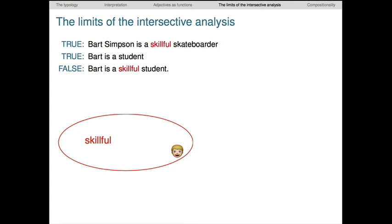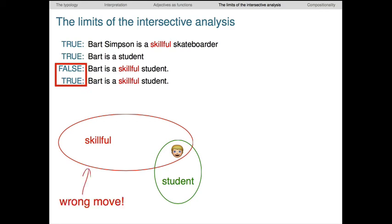It thus follows from our assumption that he's a student that he's also a skillful student. But this contradicts our previous assumption. Where did we go wrong? It was in assuming that we could define a set of skillful things independently of the N being modified. Being skillful at one thing doesn't make you skillful at all things, but the intersective analysis would force us to just such an absurd position. The functional meaning for skillful avoids this because it lets us say for each input N what the resulting output set is.